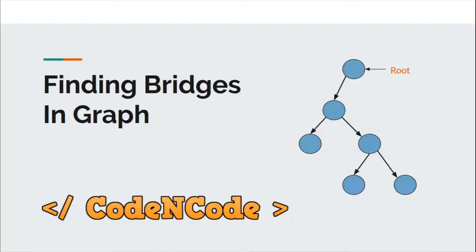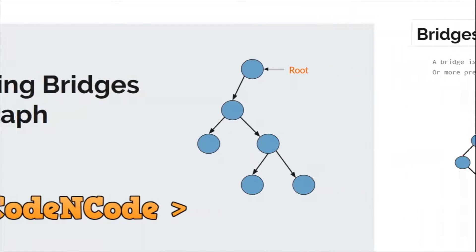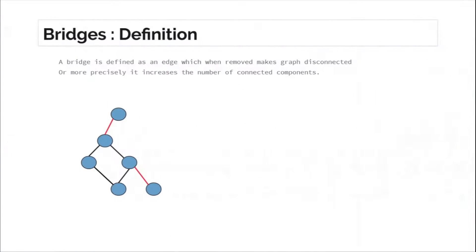Hello guys, this is Code and Code, and this is the 11th lecture of this graph theory series part 1. In this lecture we are going to study about bridges — how we can find bridges in a given graph. By definition, a bridge is an edge which when removed makes the graph disconnected, or it increases the number of connected components.